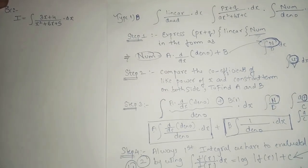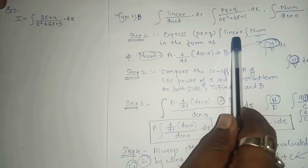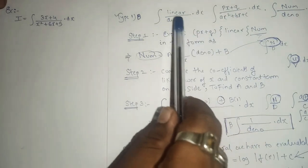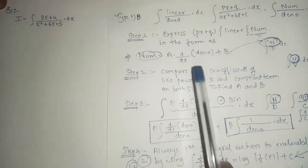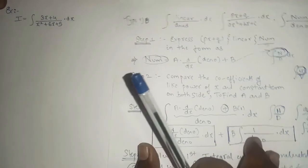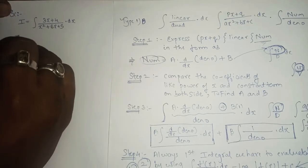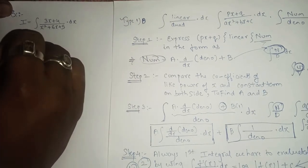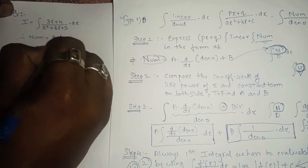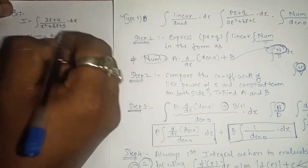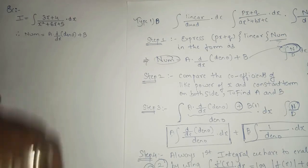The numerator is linear and denominator is quadratic. Step number one: we have to express px plus q — the numerator — in a specific form. We'll write the format: numerator equals A times derivative of denominator plus B. The numerator here is 3x plus 4.